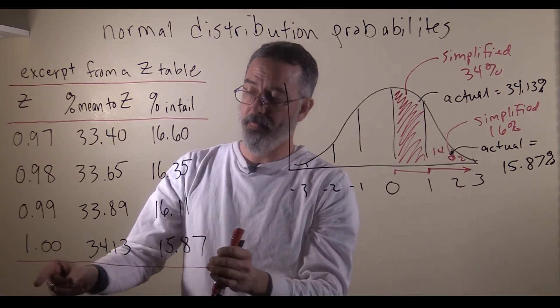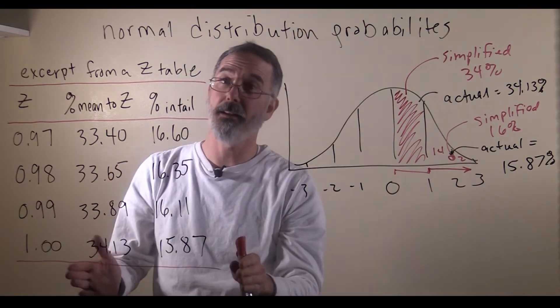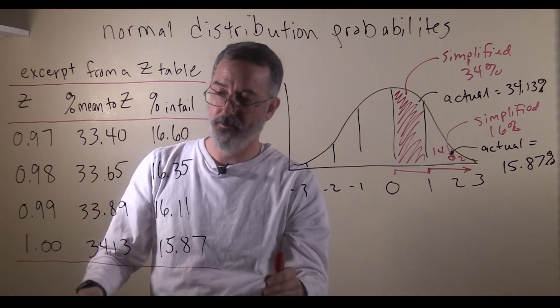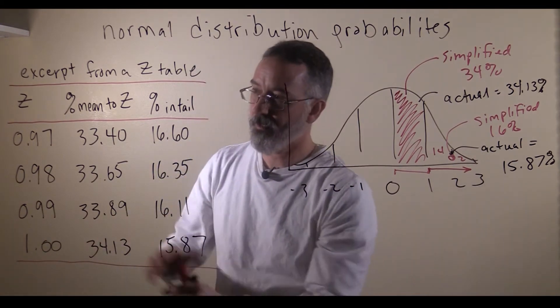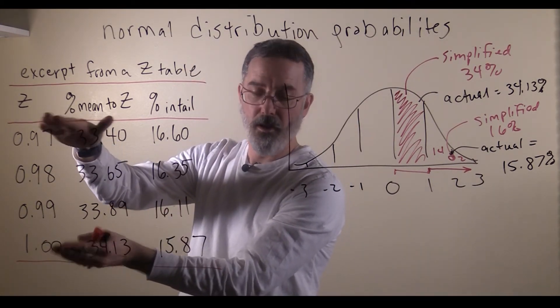If you recall, the z of negative 3 to plus 3, that is 99.7% of the whole area under the curve. So after 3, there is not much change in these values. But this is just a very small excerpt that we are going to be using for our examples that we work through right now.